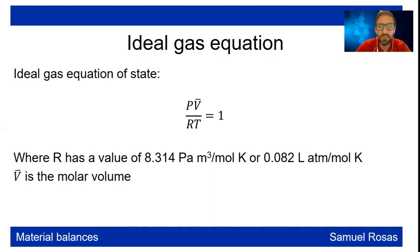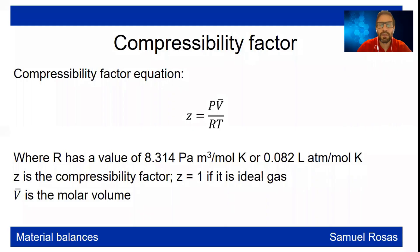In this case, v is the molar volume, the volume per unit mole, and R is the universal gas constant. A more real gas would be the compressibility factor equation where we have z equals PV over RT. z is the compressibility factor. We're going to learn how to determine this one, and if z equals one, then it is an ideal gas.